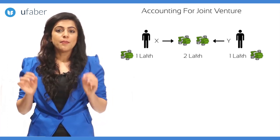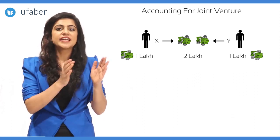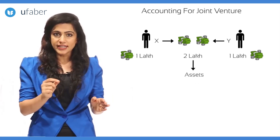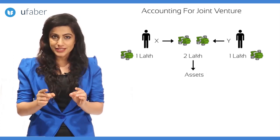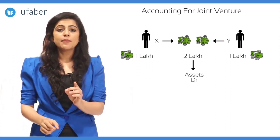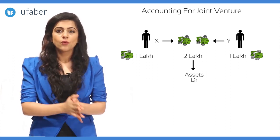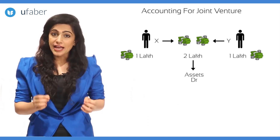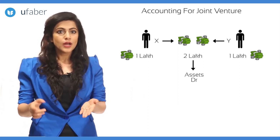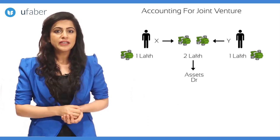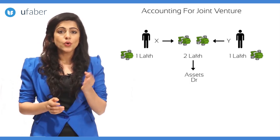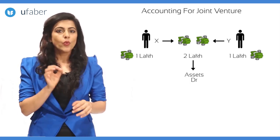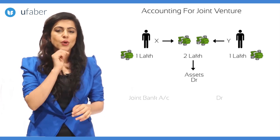The amount being brought in is an asset. The golden rule for asset or real account is debit what comes in, credit what goes out. Hence we would debit cash account — but no, we cannot debit cash. We have opened only a joint bank account, so we debit joint bank account.